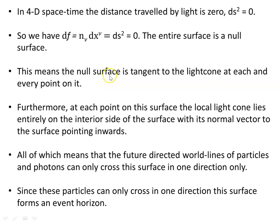The null surface is tangent to the light cone at each and every point on it. Furthermore, at each point on this surface the local light cone lies entirely on the interior side of the surface, with the normal vector pointing inwards. All of which means that the future-directed worldlines of particles and photons can only cross this surface in one direction — inwards — not the other way. Since these particles can only cross in one direction, this surface forms an event horizon.